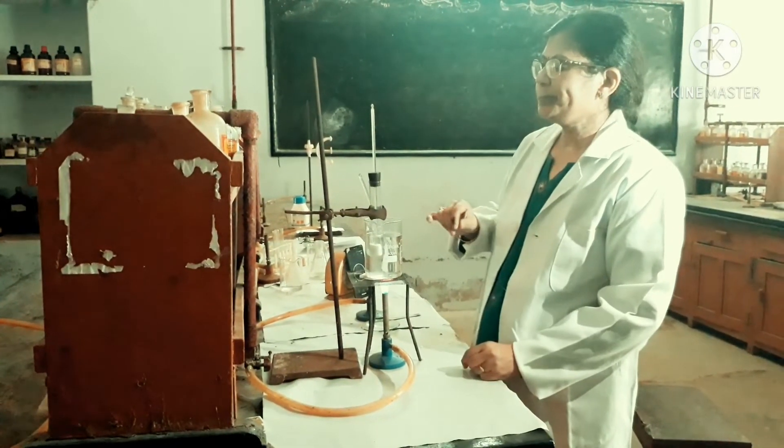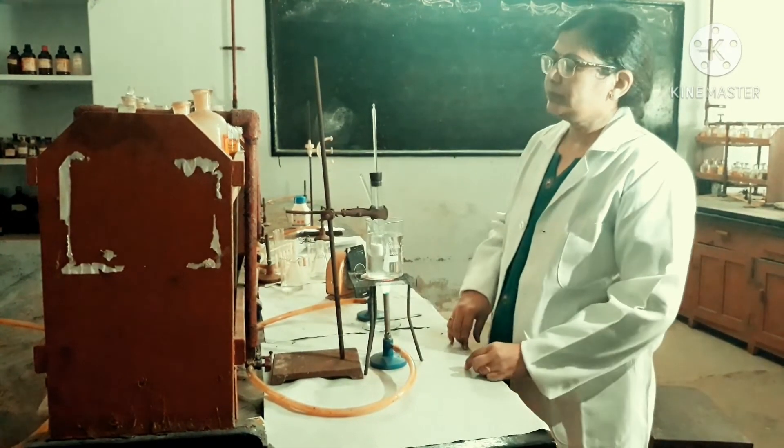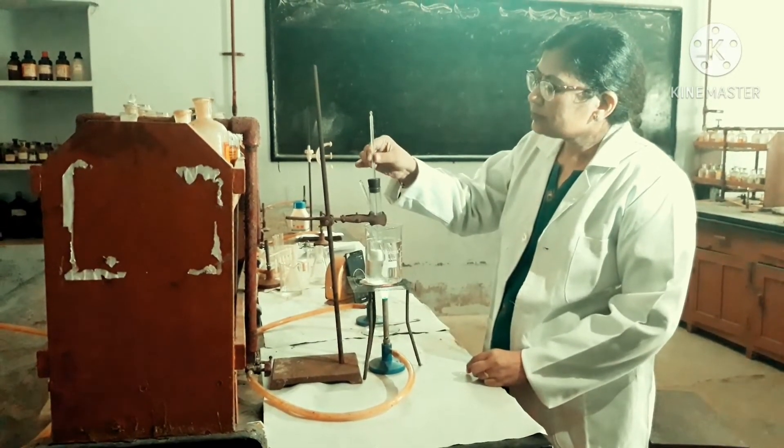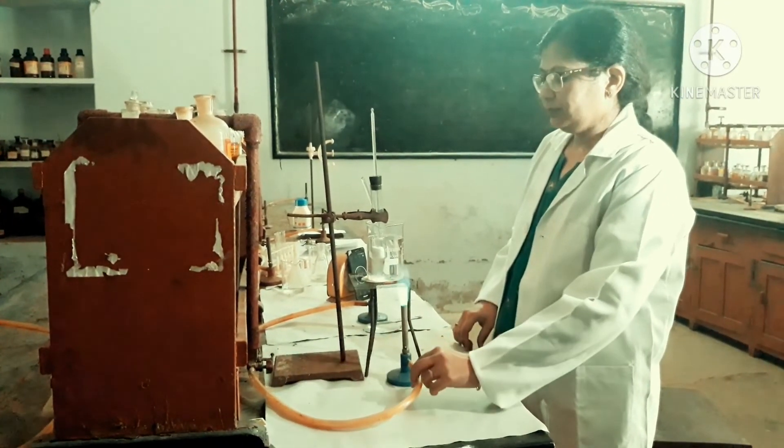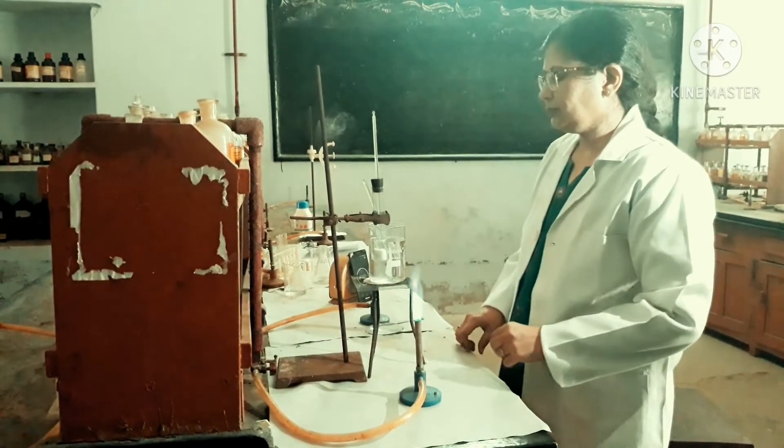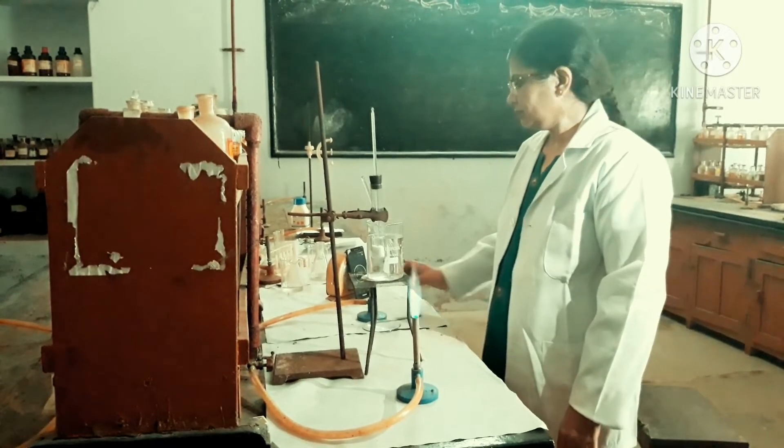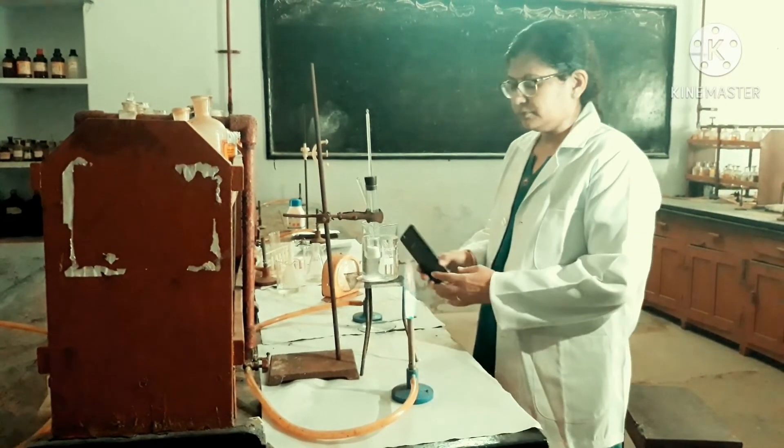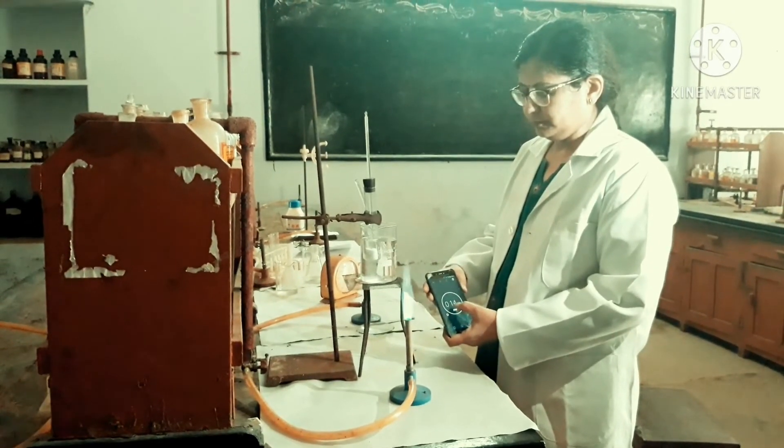Continuously note the temperature of the thermometer up to 70 degrees Celsius per minute. Remove the burner and allow the temperature of the substance to fall down. Again note the temperature reading during cooling from 70 degrees centigrade per minute.